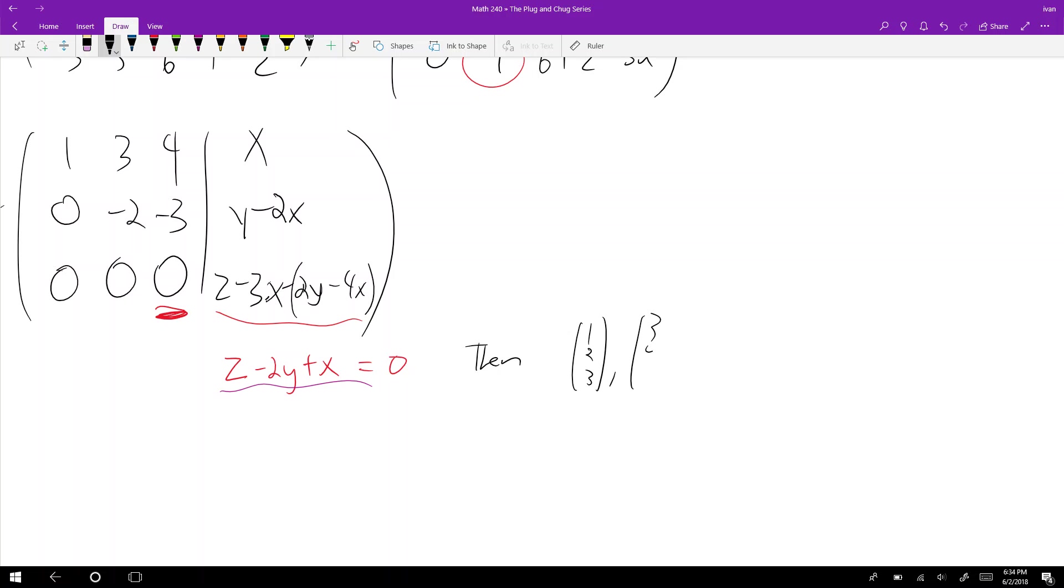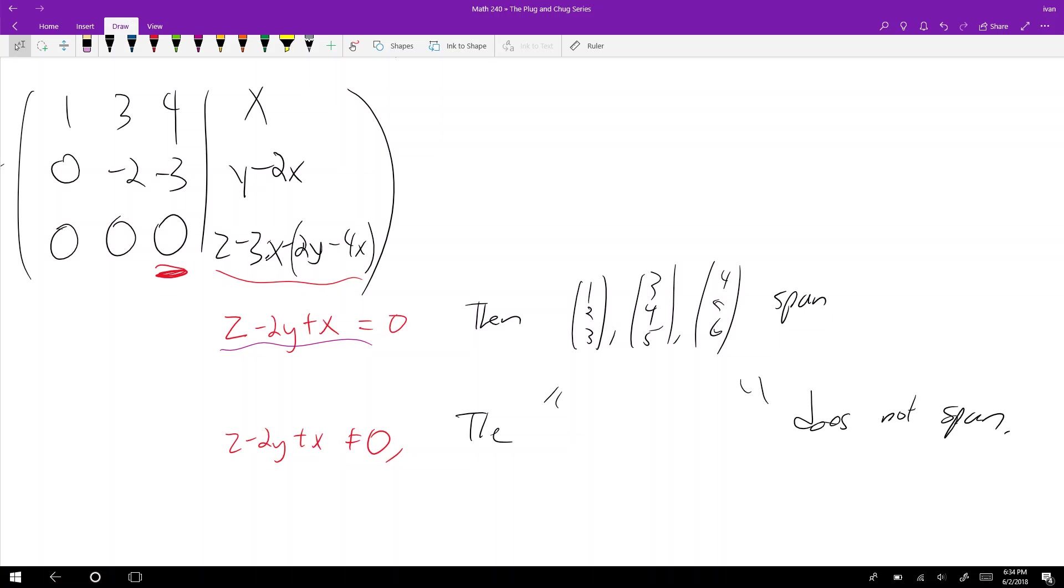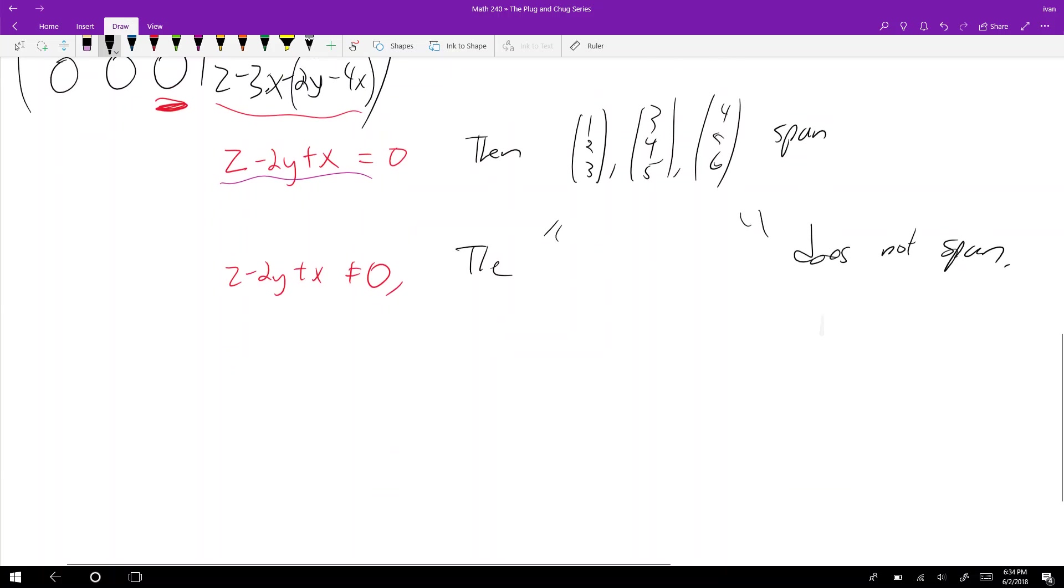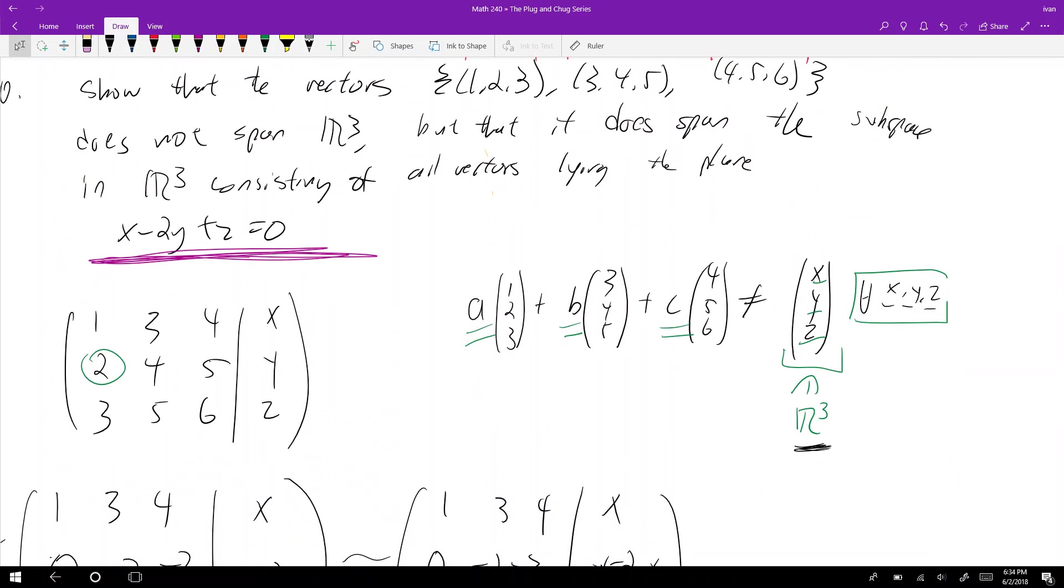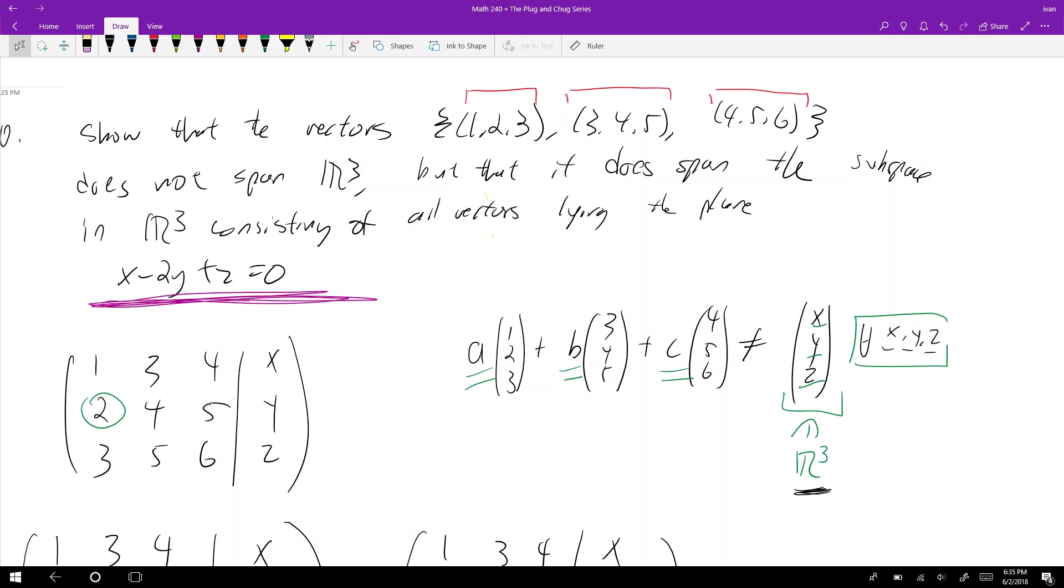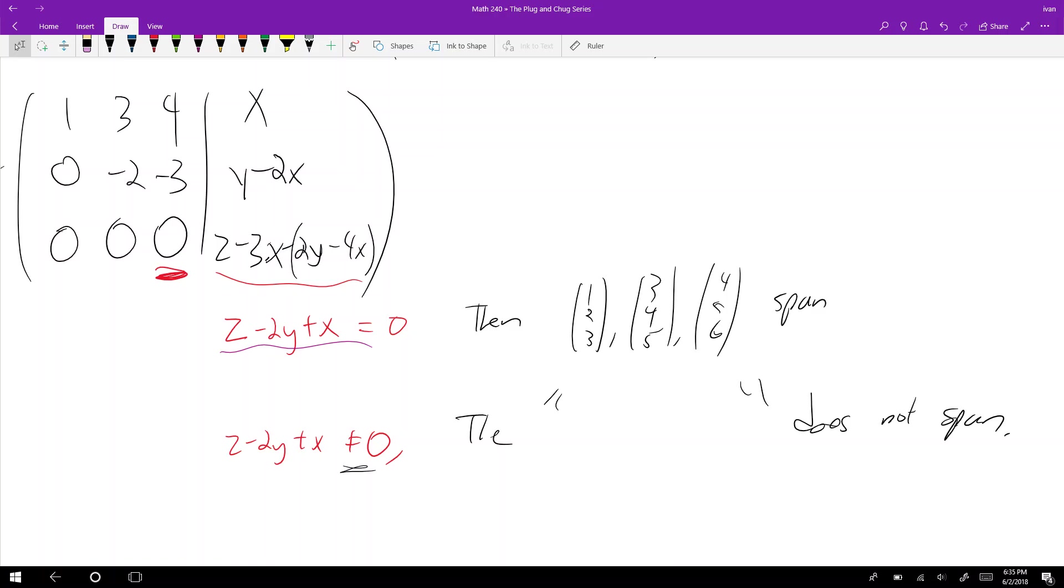However, if z minus 2y plus x is not equal to 0, then this set does not span. Because (x,y,z) are just any vector in R3, and there are certain cases where I can choose (x,y,z) such that they don't equal zero in this equation, that means this set of vectors may not always hit the vector that I choose. If (x,y,z) does not satisfy my equation, the set doesn't span that vector.